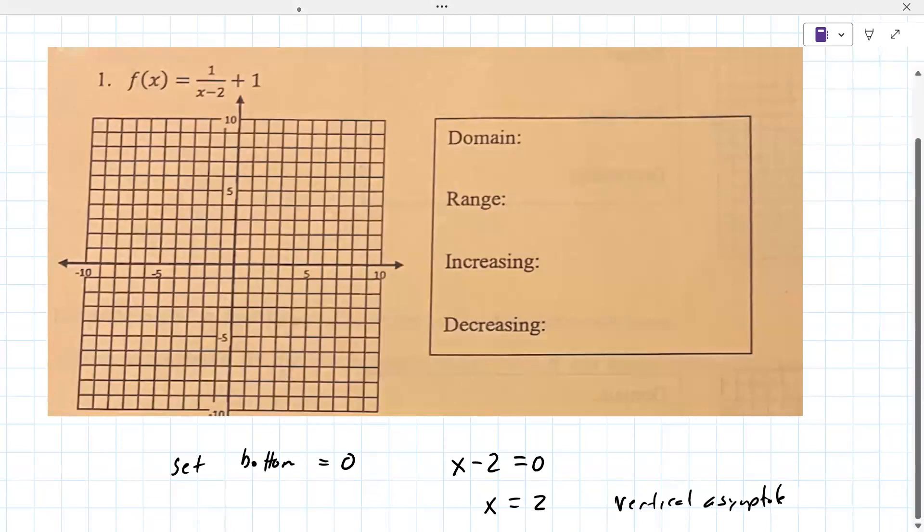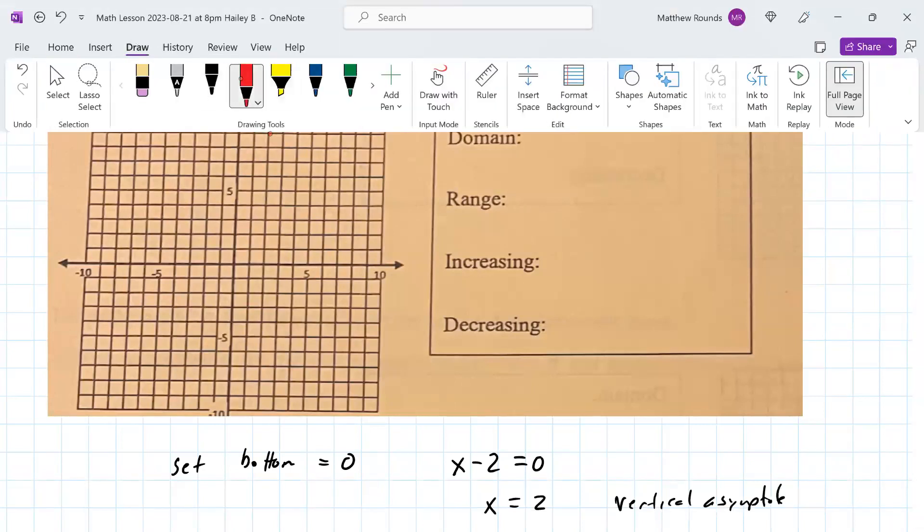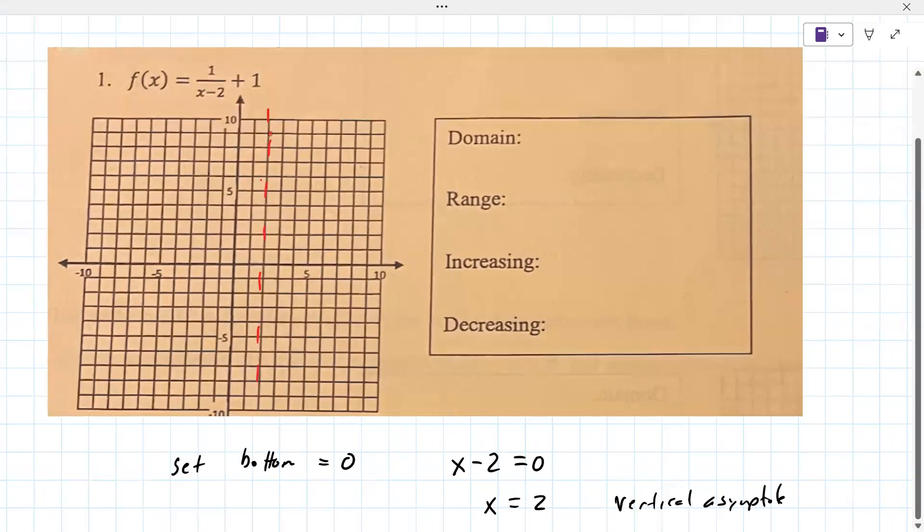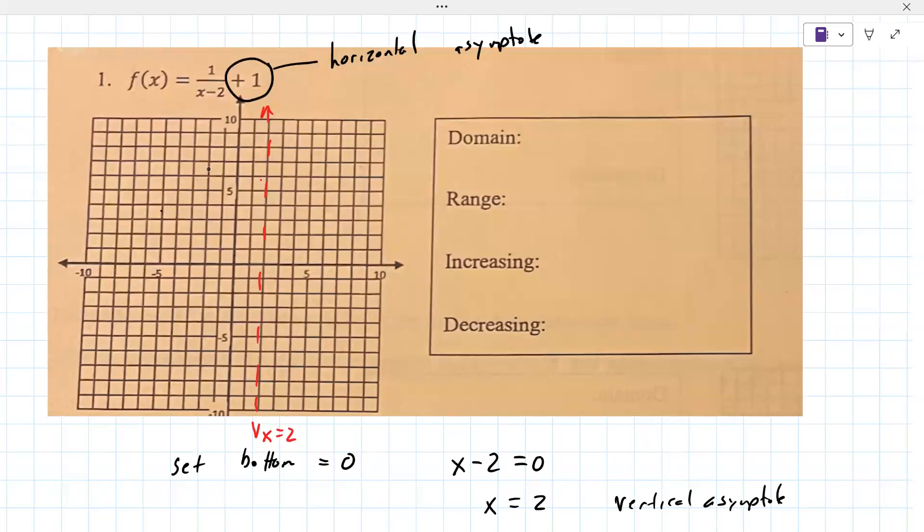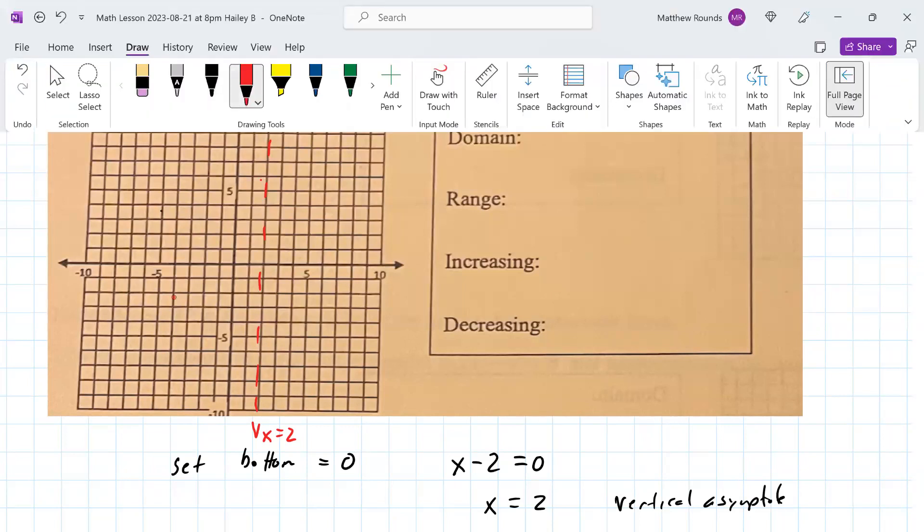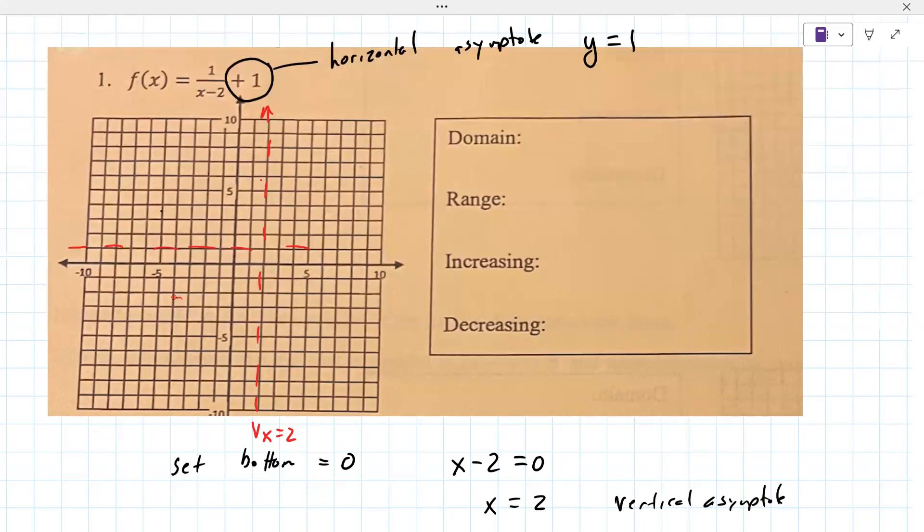At x equals two that's a vertical line. I'm going to put in a different color just because it'll stand out better. This is the line x equals two. Now when it's in this form, this number right here is the horizontal asymptote, and it's y equals one. That gets us to answer questions like domain, range, increasing, decreasing.